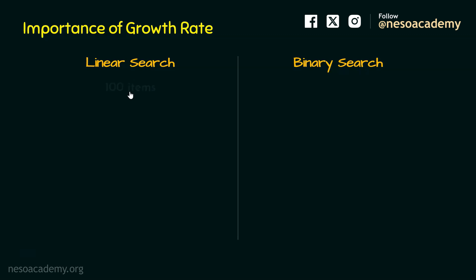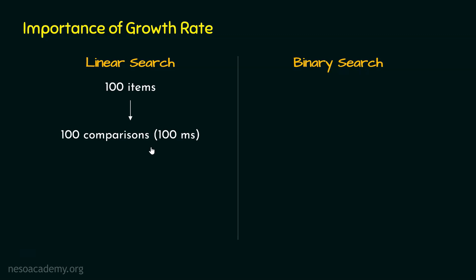In case of linear search, if we have 100 items, then it needs 100 comparisons to come to the conclusion whether the key we are looking for is available in the list or not. If one comparison takes 1 millisecond, then 100 comparisons will take 100 milliseconds. So linear search takes 100 milliseconds to look for a key in a 100-item list.